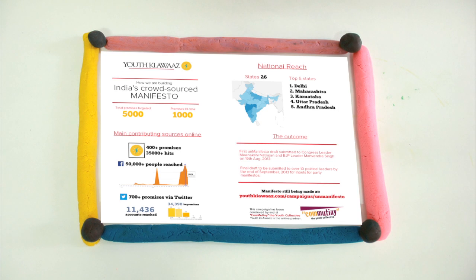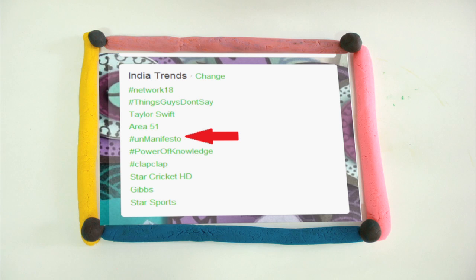Unmanifesto campaign has reached 35,000 online hits through 50,000 people on Facebook and 11,436 on Twitter. In fact, the Unmanifesto hashtag trended on Twitter in India trends at number 5 with 780 tweets recently.